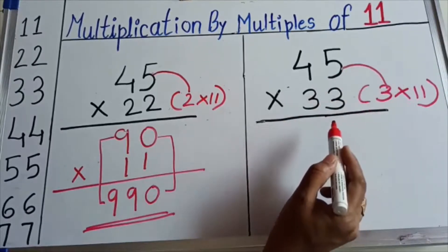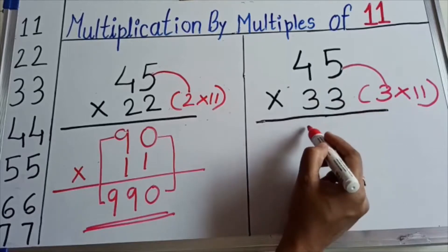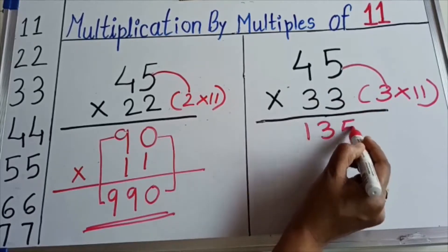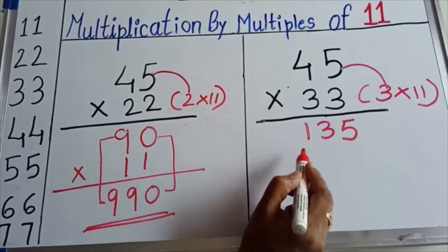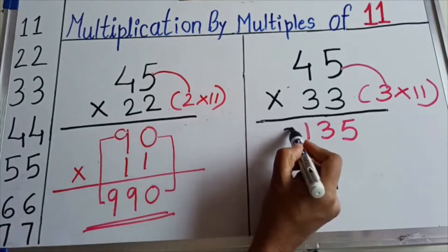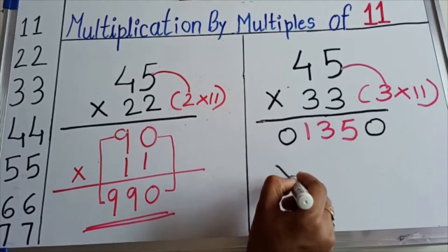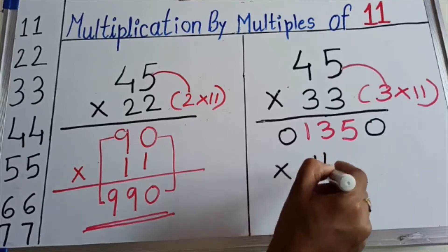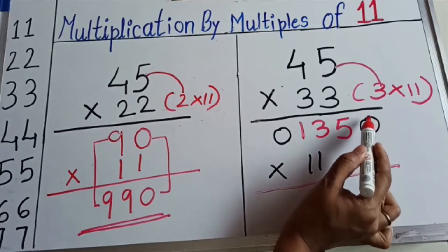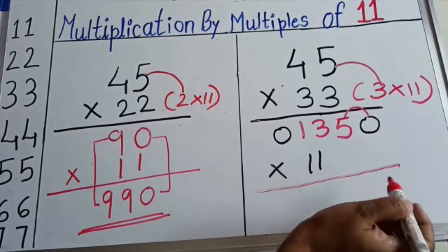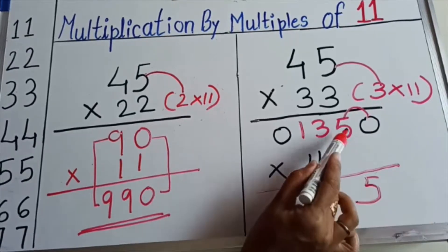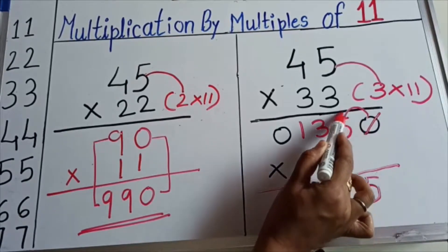45 3's are 135. Now to solve this add single 0 on both the sides. Now multiply this with 11. Now we will do the addition. 0 plus 5 gives you 5, 5 plus 3 gives you 8.